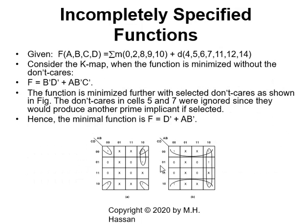As an example, we have a function given as the sum of minterms 0, 2, 8, 9, 11, plus D — don't care conditions at 4, 5, 6, 7, 11, 12, 14. In case A, I did not use any don't care, and in case B, I used don't cares to simplify the map further, to minimize the function further.